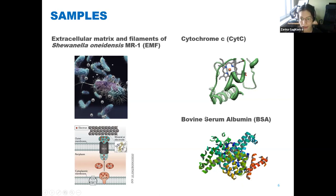And the last object was the bovine serum albumin. This is a protein which has nothing in common with the structure of cytochromes or of extracellular matrix and filaments, and it wasn't expected to show conductivity.